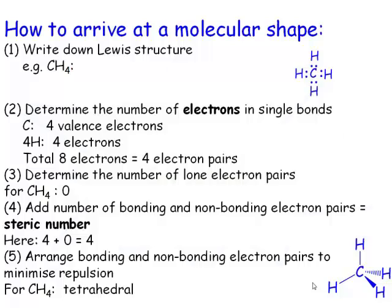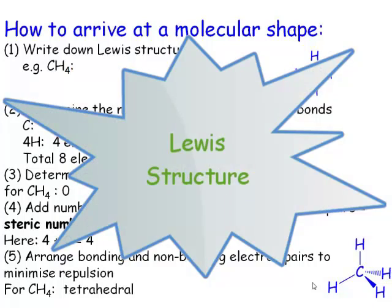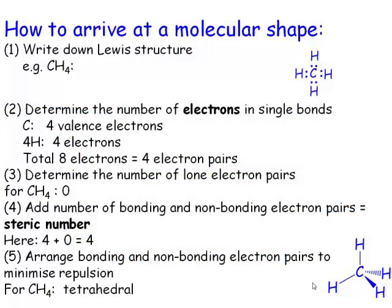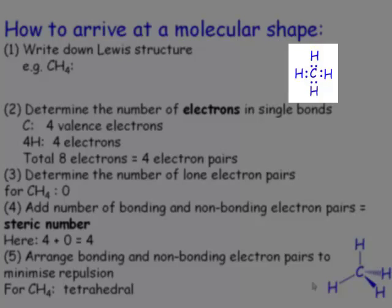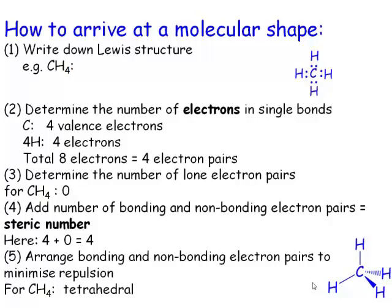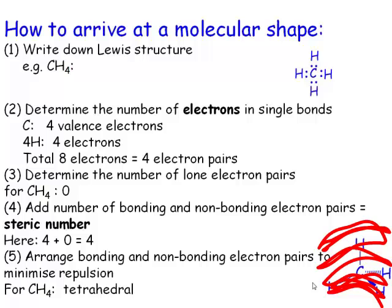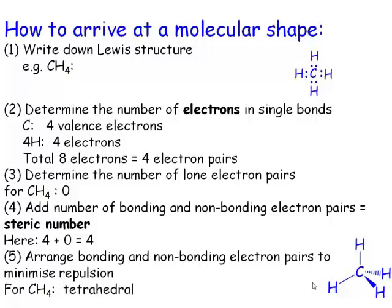You start with the Lewis structure. Methane consists of four hydrogen atoms and a carbon atom. Carbon has four valence electrons. So you'd start off by drawing carbon with four electrons around it. You then take your hydrogen with one electron each and put those around the molecule.